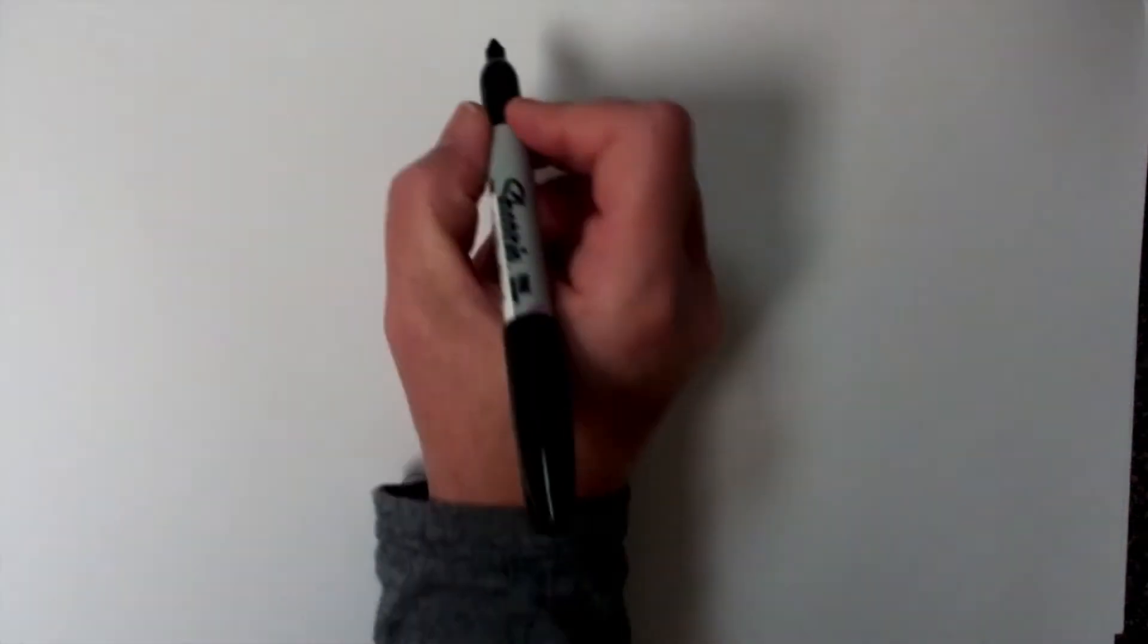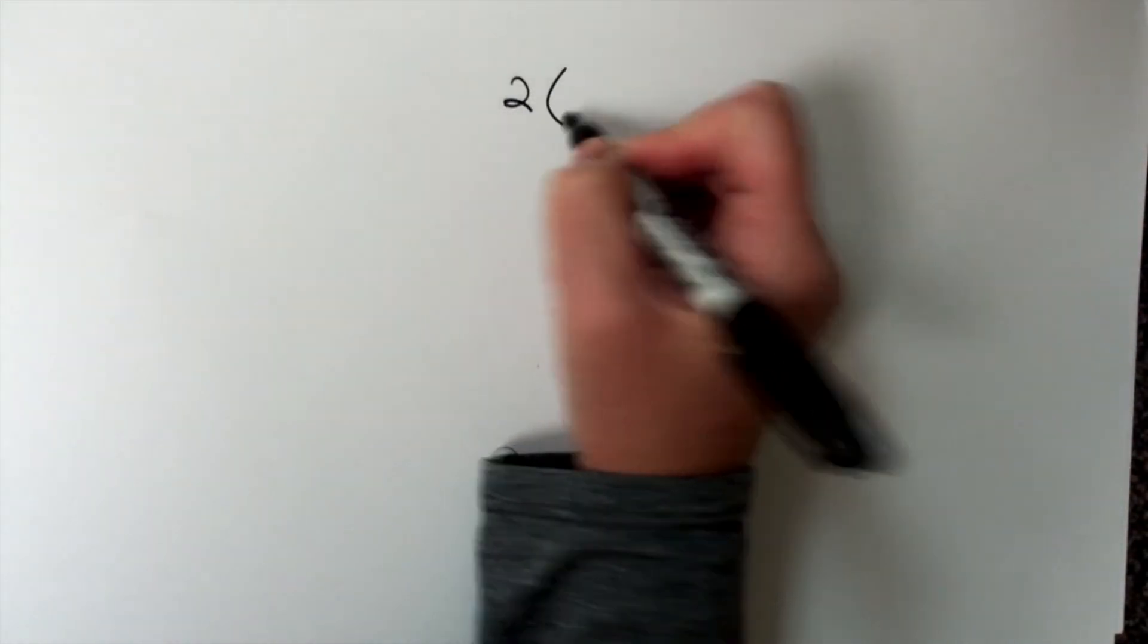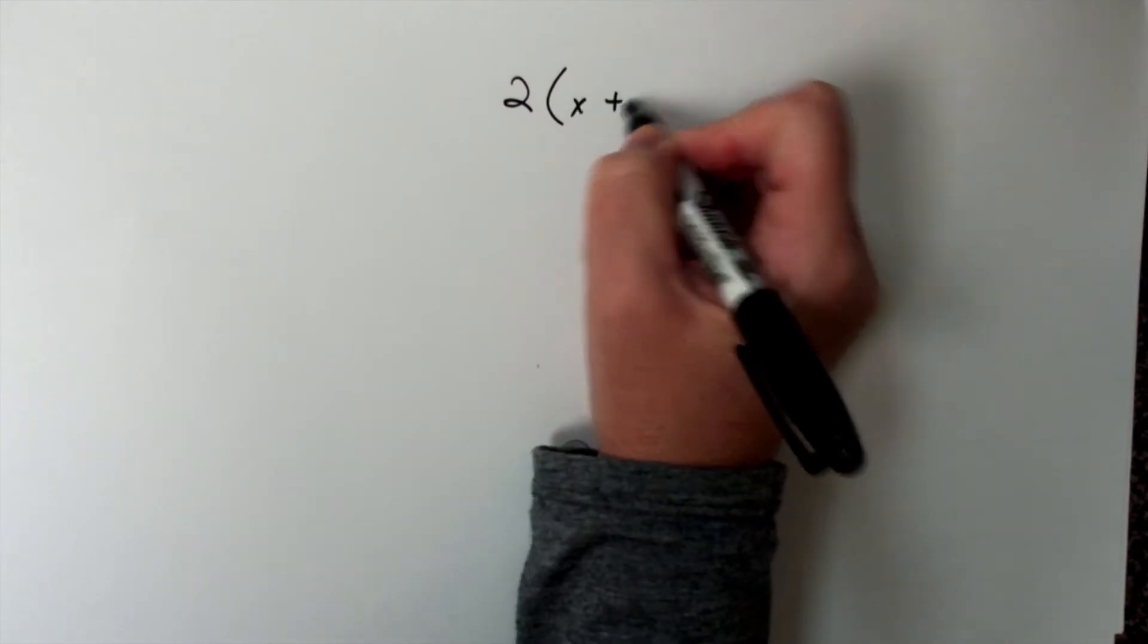Let's talk about the distributive property because that sometimes confuses our kids. So let's do a couple of those. Let's do 2 times x plus 3, and we're going to do the distributive property.